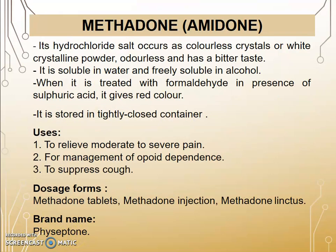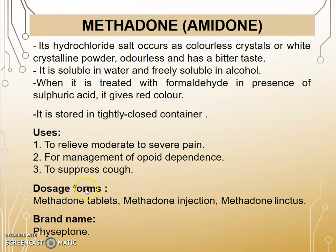The next drug is Methadone, also called Amidone. Its hydrochloride salt occurs as colorless crystals or white crystalline powder, odorless with a bitter taste. It is soluble in water and freely soluble in alcohol. When treated with formaldehyde in the presence of sulfuric acid, it gives a red color. It is stored in a tightly closed container. Uses: to relieve moderate to severe pain, for the management of opioid dependence, and to suppress cough. Dosage forms: Methadone tablet, Methadone injection, and Methadone linctus. Brand name: Physeptone.